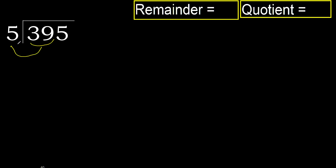39 is not less than 5. With 39, find which number multiplied by 5 is nearest to 39 but not greater. 5 multiplied by 8 is 40, which is greater. 5 multiplied by 7 is 35, which is not greater. 39 minus 35 is 4.